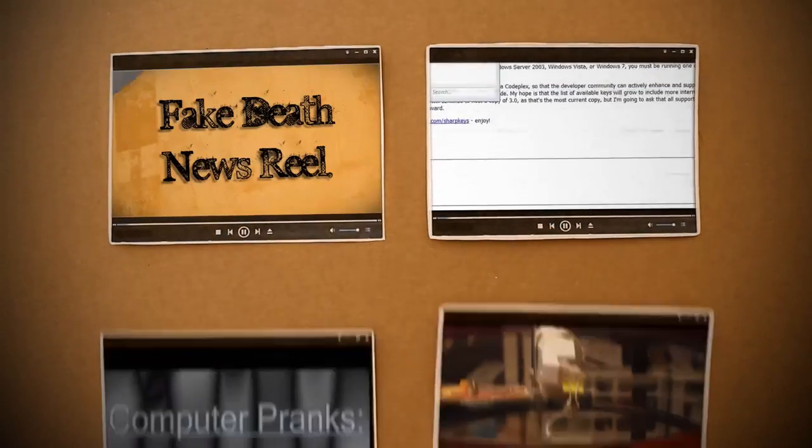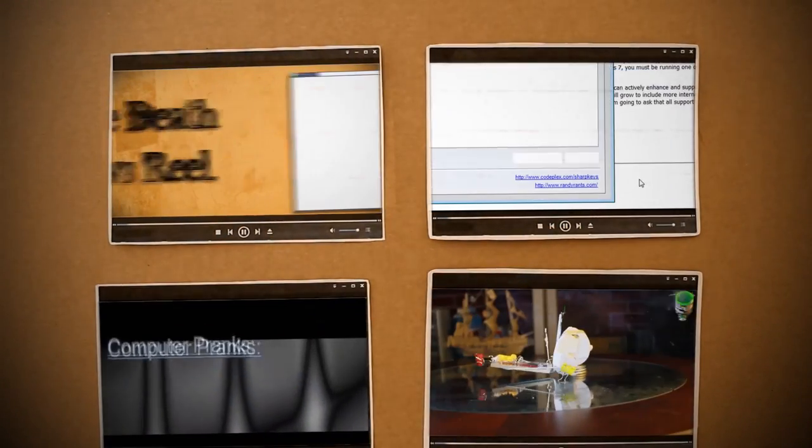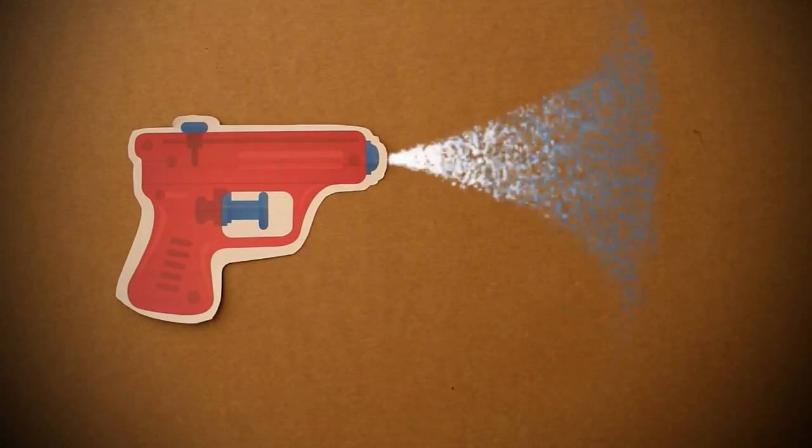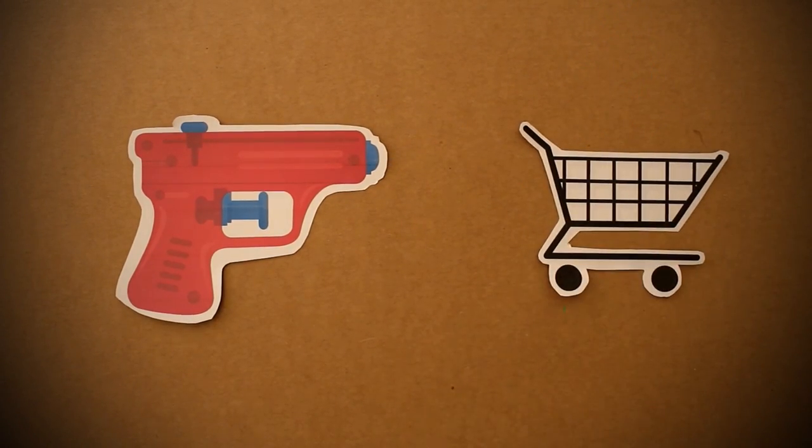Each year for April Fools, I challenge myself to come up with a simple geeky prank. This year, my goal is to make a motion-detecting squirt gun with parts that can be found at a local grocery or hardware store. Let's see how far we can get.